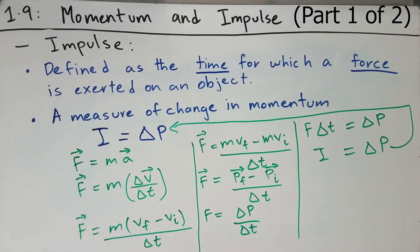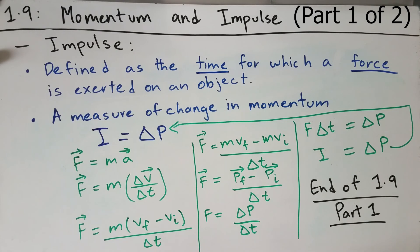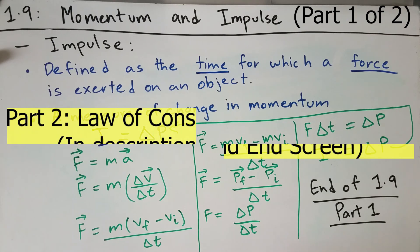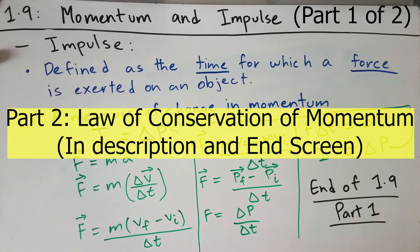So there's a relation between impulse and momentum, and this is it for section 1.9 part 1. In the next video we will talk about the law of conservation of momentum and apply it to some real-life examples. Leave a comment with feedback so I can improve my videos in the future. Thanks for watching, and I'll see you in the next video.